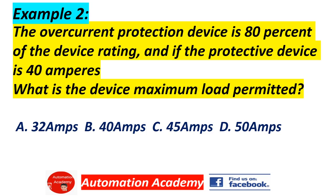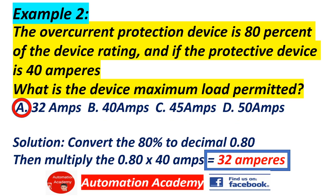Example 2: the overcurrent protection device is 80% of the device rating, and if the protective device is 40 amps, what is the maximum load permitted? Answer: A, 32 amps. Solution: convert 80% to decimal — 0.80 — then multiply 0.80 by 40 amps. The answer is 32 amps.